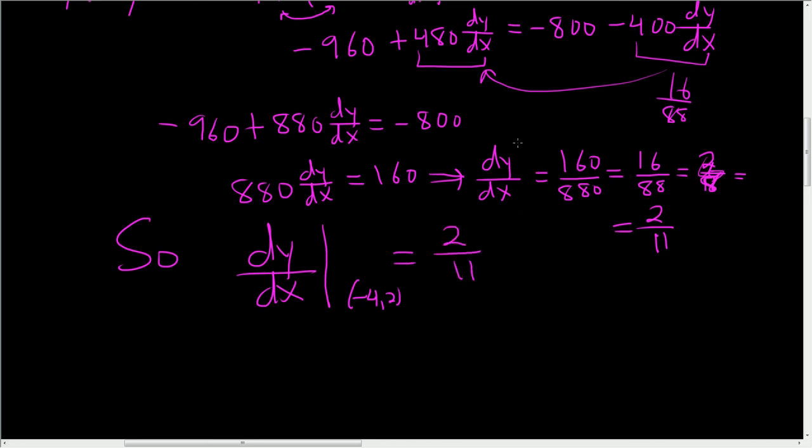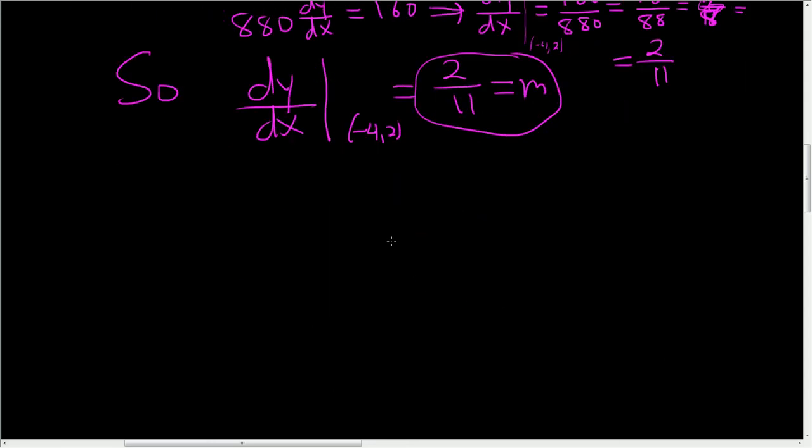Now, we were a little sloppy here in our computations. I didn't write the little line here with the negative 4 and the 2. It just got so cumbersome with these computations. Anyways, this is the slope. So now to finish, we use our point and our slope to find the line. So our point was negative 4, 2. That'll be our x1. This is our y1.